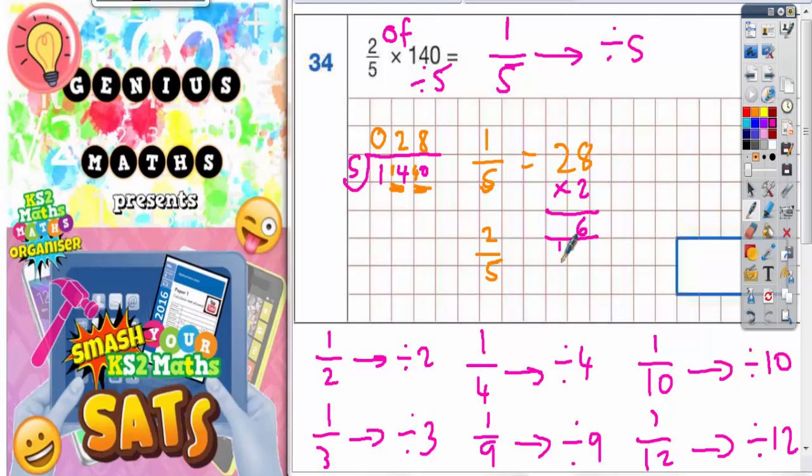Two times eight is sixteen, carry the one. Two twos are four, plus the one is five. So it looks as though it's going to be fifty-six. So two-fifths times 140 is fifty-six. And that's the same as saying two-fifths of 140 is fifty-six.